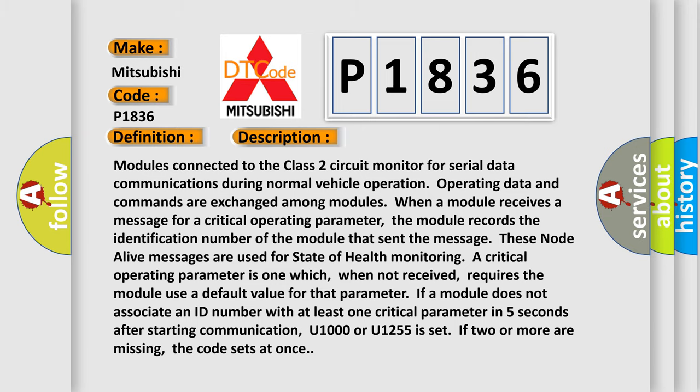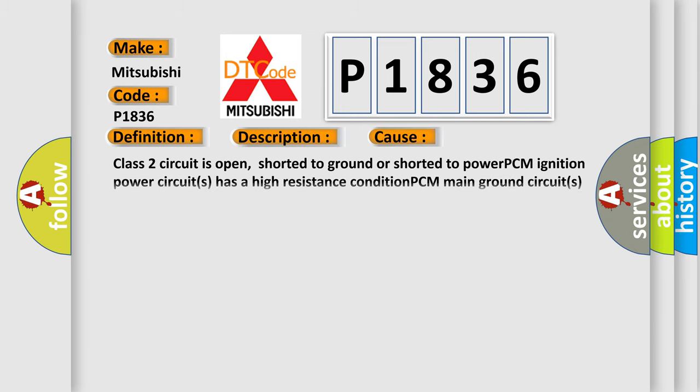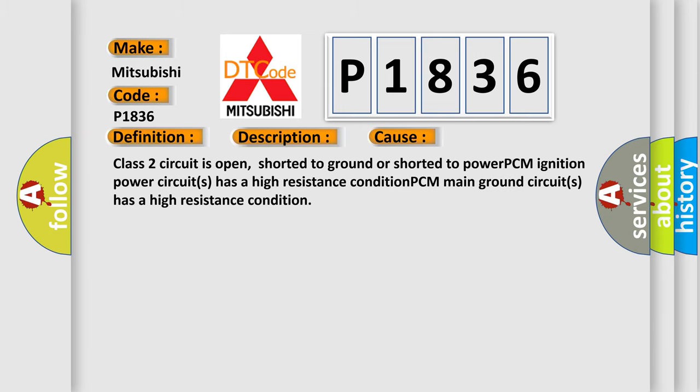This diagnostic error occurs most often in these cases: the Class 2 circuit is open, shorted to ground, or shorted to power. The PCM ignition power circuits have a high resistance condition, or the PCM main ground circuits have a high resistance condition.